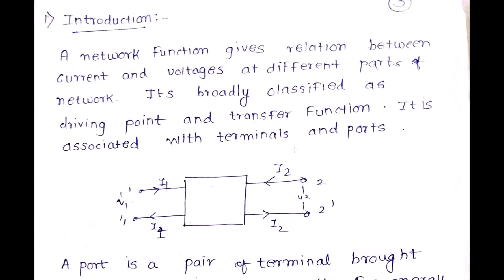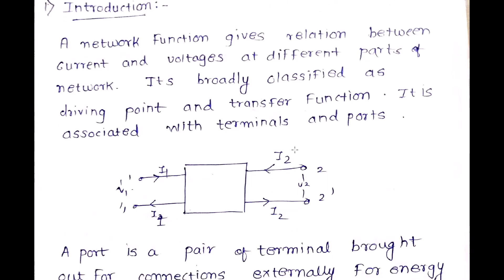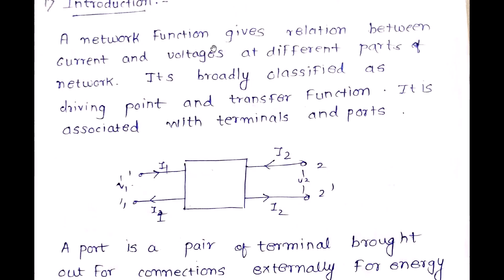A network function gives the relation between the current and voltages at different parts of the network. It is broadly classified as driving point function and transfer function. This network, represented as a box, can contain resistors, capacitors, and inductors. At port one we have V1 and I1, and at port two we have V2 and I2.